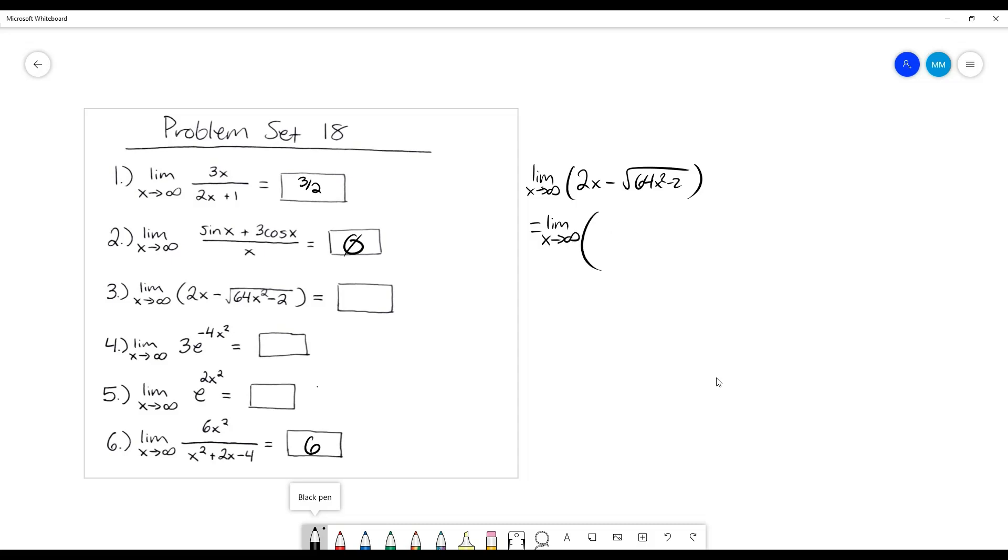So this is going to be the same as... So it's going to be 2x minus this. And that's going to be times on top and bottom, 2x plus it. And, of course, we kind of foil that, right?